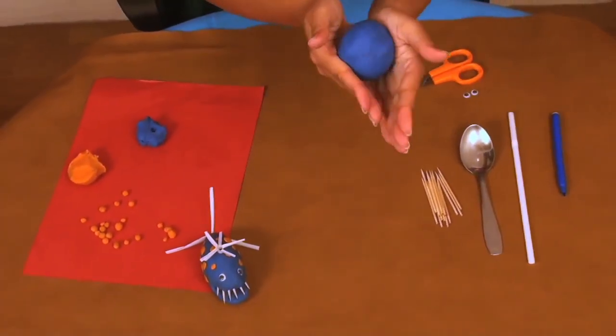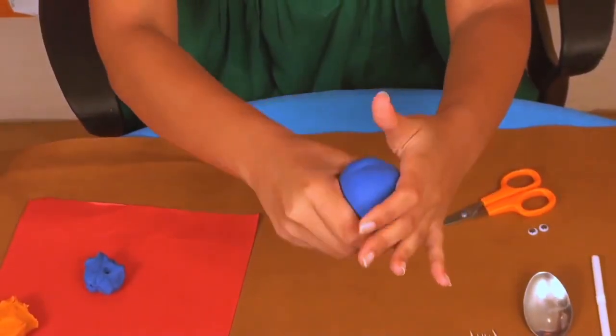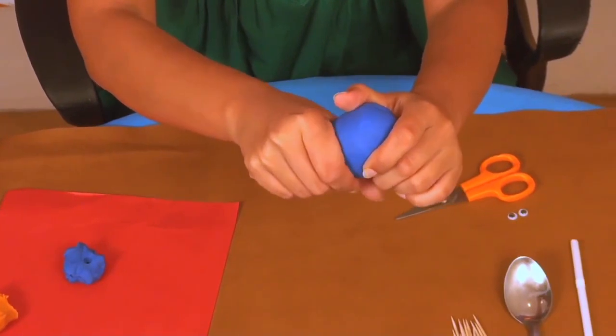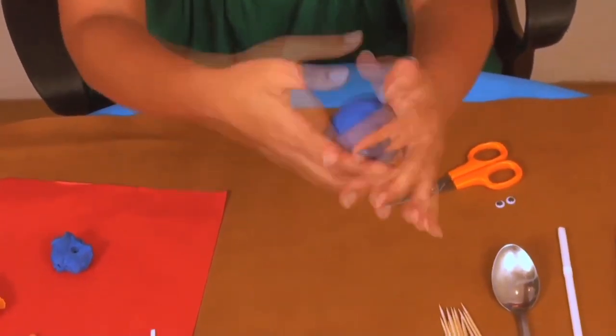We'll start by making the body of the whale. I've kneaded the blue play-doh and molded it into a conical shape. I've pinched out one end to make it a little narrow for the tail.